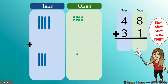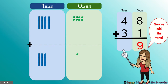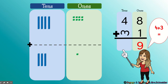We always start on the right in the ones place. We have 8 plus 1 equals 9. And now we're going to add the tens. We have 4 plus 3 — 4 tens plus 3 tens equals 7 tens.